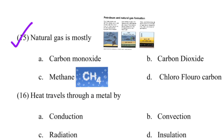The natural gas is mostly dash. Options are carbon monoxide, carbon dioxide, methane, and chlorofluorocarbon (CFC). The correct answer is methane. The chemical formula of methane is CH4.